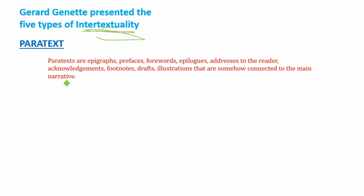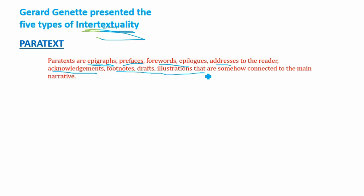The first type is paratext. Paratext refers to elements like epigraphs, prefaces, forewords, epilogues, addresses to the reader, acknowledgments, footnotes, drafts, and illustrations that are somehow connected to the main narrative. In other words, if you are writing any novel or play, the information provided before or around the main text — such as epigraphs, prefaces, and footnotes — is called paratext.